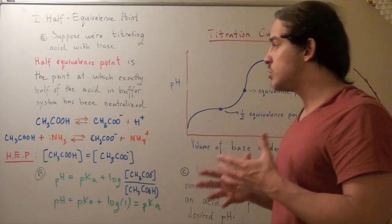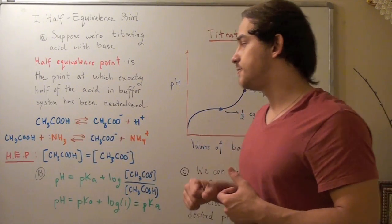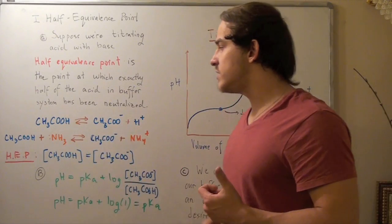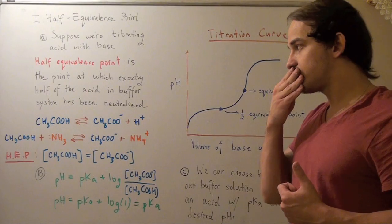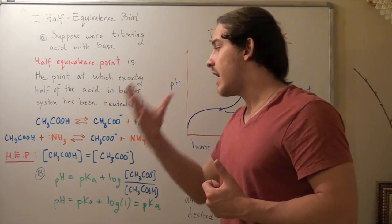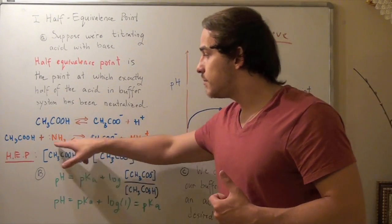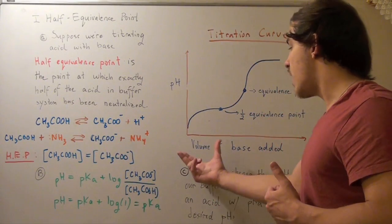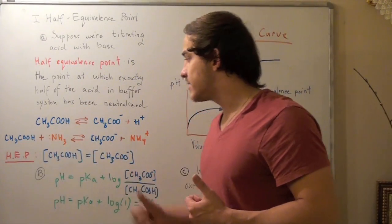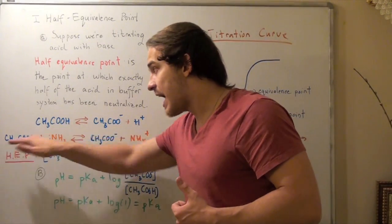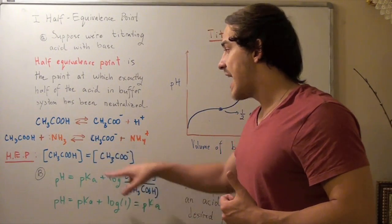Now suppose we choose our buffer system to consist of acetic acid. Acetic acid dissociates into acetate ion and an H+ ion. Now suppose we begin adding some volume of our base, and suppose we choose our base to be ammonia. So we're adding the volume of ammonia into our acetic acid. Now the reaction looks like this. The conjugate acid, acetic acid, dissociates into the conjugate base, acetate ion.